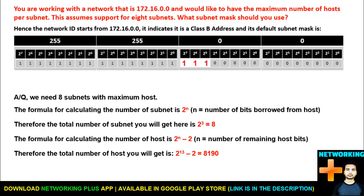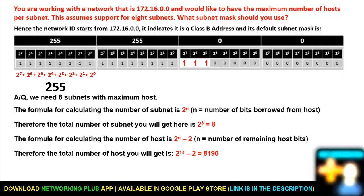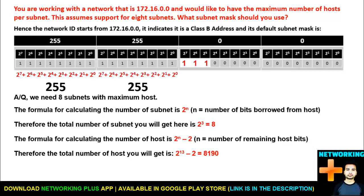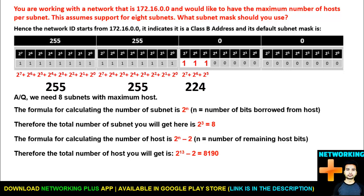To find the subnet mask, count the value of all network bits per octet. In the first octet all eight bits are network bits: 2^7 + 2^6 + ... + 2^0 = 255. The second octet is the same: 255. In the third octet only three bits are borrowed for the network: 2^7 + 2^6 + 2^5 = 224. The last octet has zero network bits, so it is 0.